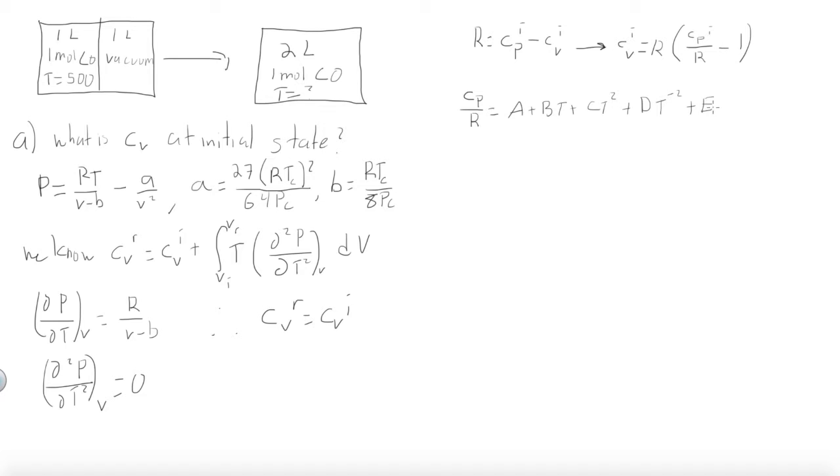The equation is equal to A plus B T plus C T squared plus D T to the minus 2 plus E T cubed. And by solving this equation, we can just plug this straight in for CPI over R.